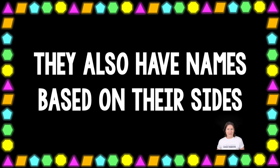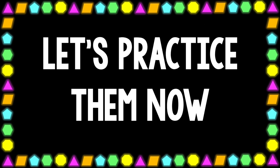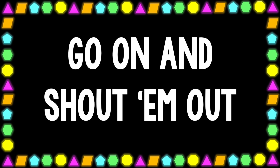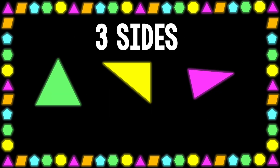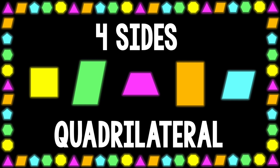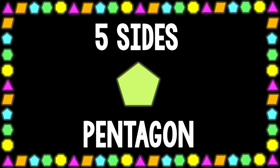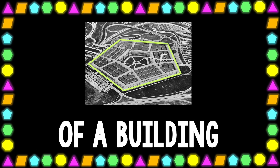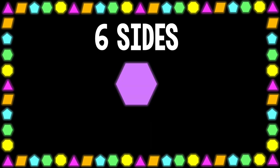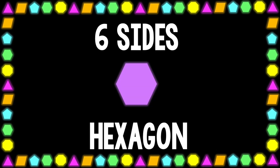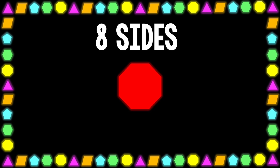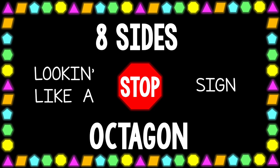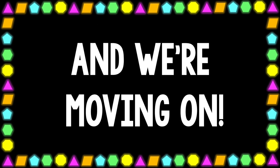Polygons also have names based on their sides. Let's practice them — shout them out everybody! Three sides: triangle. Four sides: quadrilateral. Five sides: pentagon — that's the name of a building in Washington. Six sides: hexagon. Seven sides: septagon. Eight sides: octagon — looking like a stop sign.